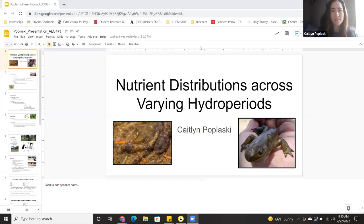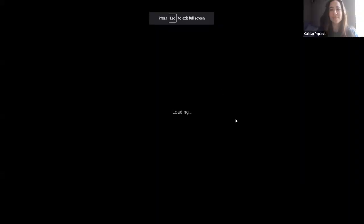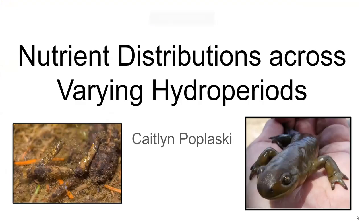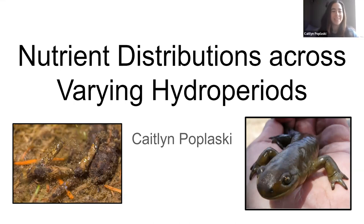We will now move on to our next student presenter. We have Caitlin Poplasky, who will be presenting on nutrient distributions across varying hydroperiods. My name is Caitlin Poplasky, and my research project looks at the nutrient distributions in animals across three different hydroperiod types. It's important to know where most nutrients are located among these three hydroperiods and how they're distributed among taxa within them, to better understand the possible implications of climate change, which is causing a shift in community composition.